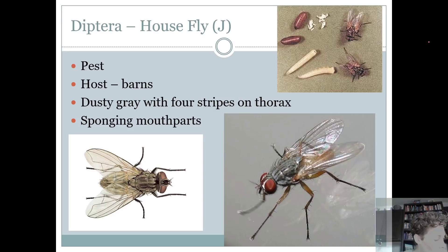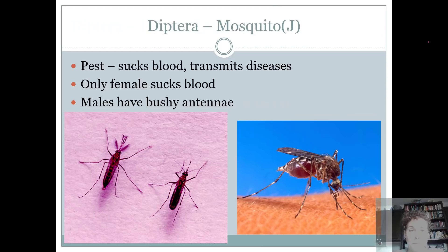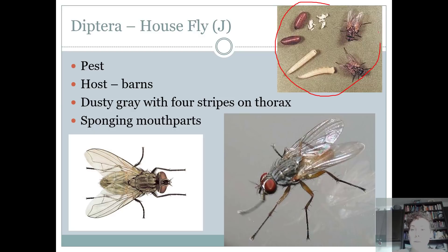House flies are a pest. Their host is barns. They're a nuisance, but they can also transmit diseases on their feet and mouth — they can pick up bacteria and crawl across your food and you get sick. Four stripes on the thorax, dusty brown or dusty gray in color, and spongy mouthparts. And you can see their complete life cycle displayed in the top corner.